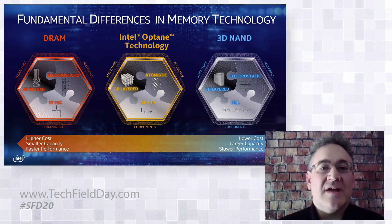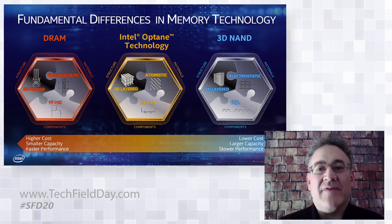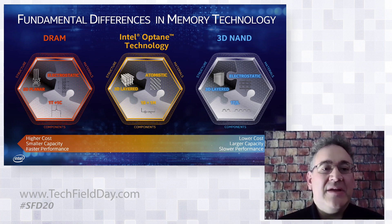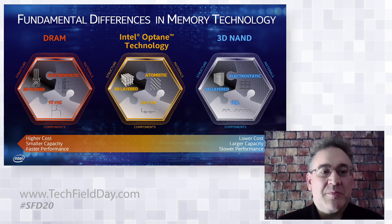I'm going to talk about the differences in memory technology. These three little hexagons represent memory cells. On the left, you have higher cost but higher performance, and on the right, you have higher density but lower performance. Starting on the left with DRAM, the memory cell is electrostatic — you use a charge to store the zero or one. It has one transistor in the substrate with a capacitor, and its structure is 2D planar, which is different from the rest of the technologies on this chart.